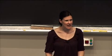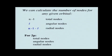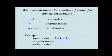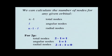For a 2p orbital, total nodes: 2 minus 1 = 1. Since l equals 1, we have one angular node, and that leaves us with zero radial nodes. So for a 2p orbital, all the nodes turn out to be angular nodes.